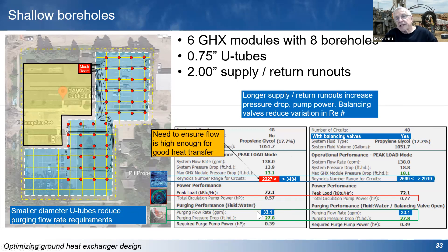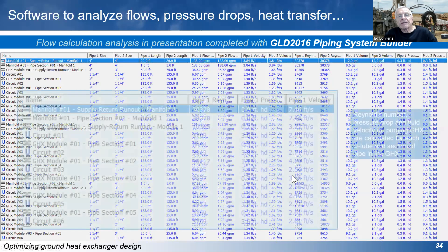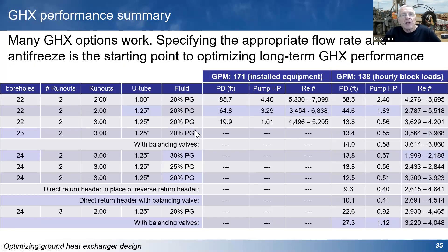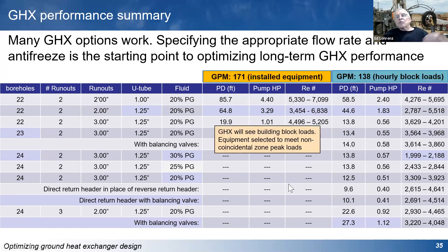That reduces the flow rate needed to flush air down to about 33 GPM per module when flushing individually. There is software available that gives you a detailed look at flow rate through each circuit, pressure drop, pipe velocity during purging, and verifies you're above two feet per second with reasonably equal pressure drops and adequate Reynolds numbers. Basically, there are a lot of different ways to design the ground heat exchanger — it's going to have an impact on pump size and the flow rate at which the system is designed to operate. Using block loads rather than design loads will give you better performance while still meeting the heating and cooling needs of the building.